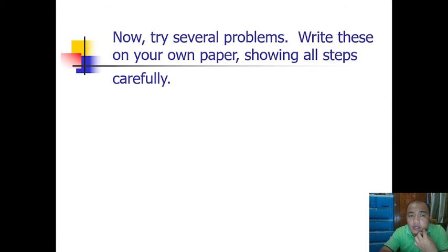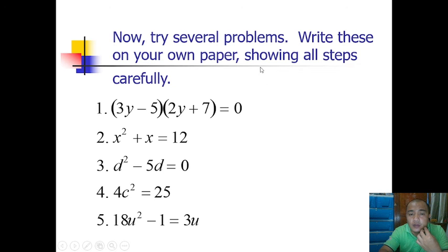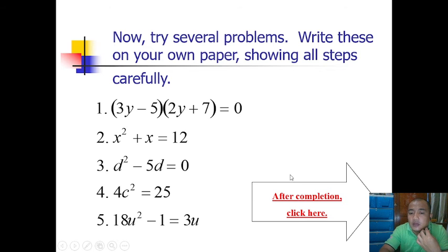Now try several problems. Write this on your own paper showing all steps carefully. You can screenshot this part and send me your answer on Facebook Messenger. Number 1: (3y-5)(2y+7)=0. Number 2: x²+x=12. Number 3: d²-5d=0. Number 4: 4c²=25. Number 5: 18u²-1=3u. After completion, click here.